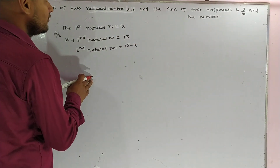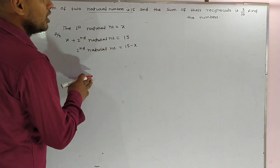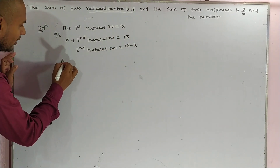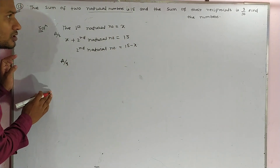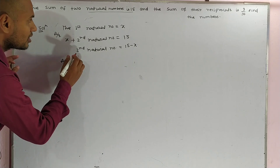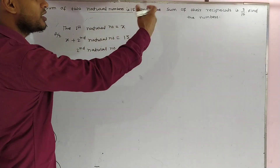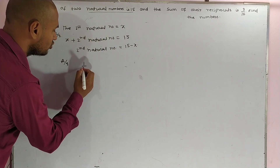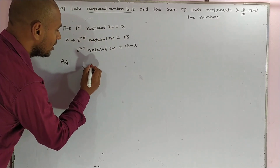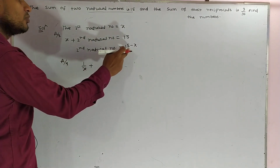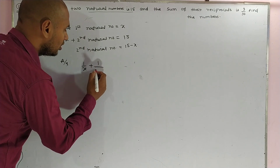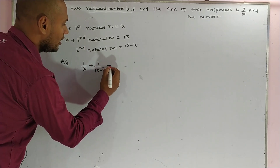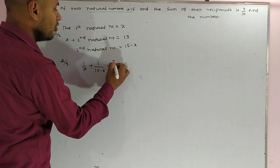After that, the sum of their reciprocals is 3 upon 10. According to the question, the reciprocal of the first natural number is 1 upon x, and the reciprocal of the second natural number is 1 upon (15 minus x), and this equals 3 upon 10.